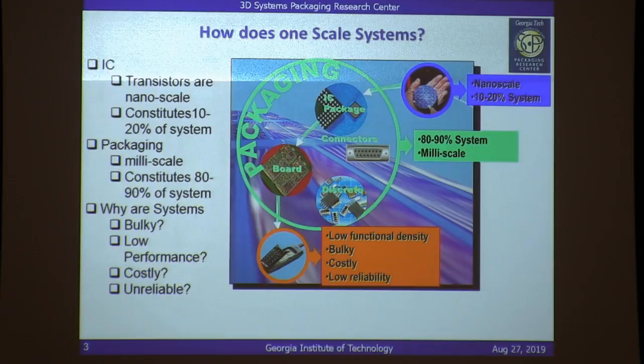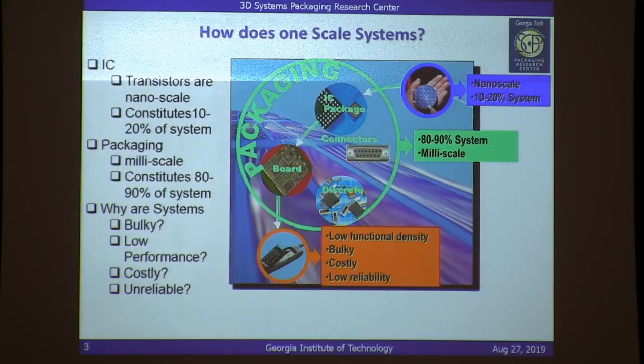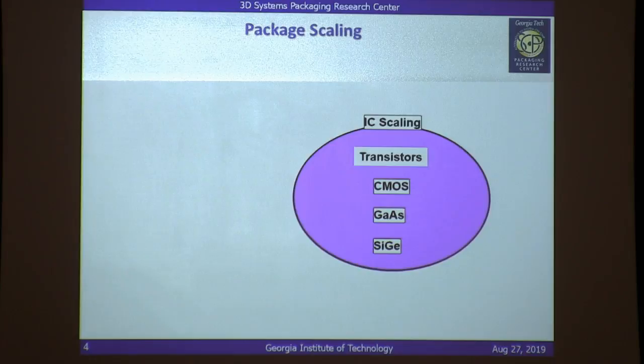The dimensions of components on the packaging side are much larger than what you can do on the transistor side. So when you ask yourself why systems are bulky, have low performance, are costly, or unreliable — it's not just about the transistors, it goes way beyond that. Transistor scaling alone is not sufficient for system scaling. You need to work on package scaling as well. Scaling of the package is as important as scaling of the transistors.